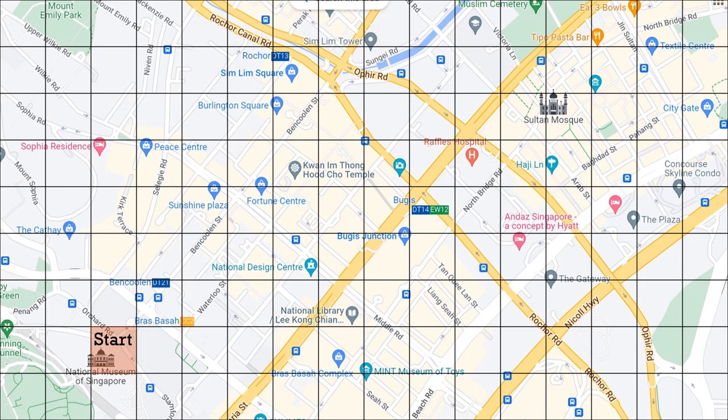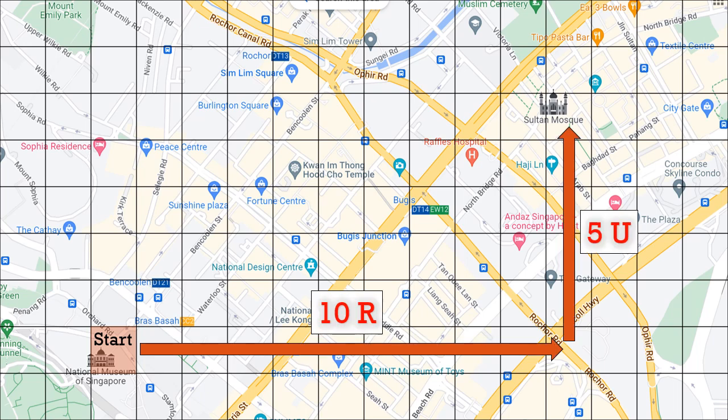Then it would be easy to tell someone, to get to Sultan Mosque, you need to move 10 boxes right, followed by 5 boxes up.